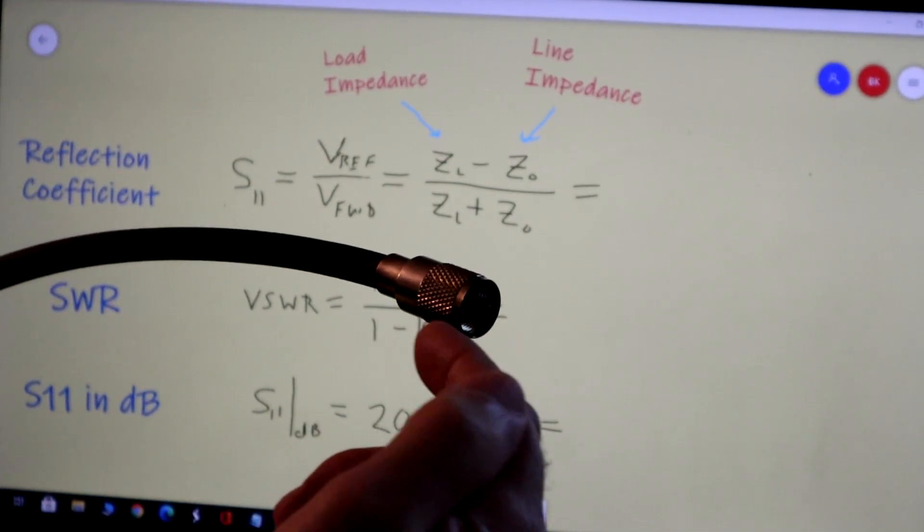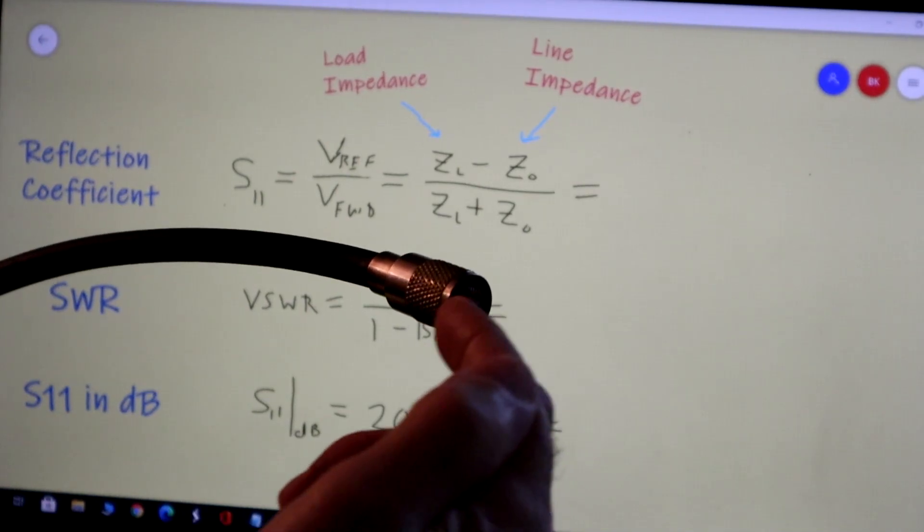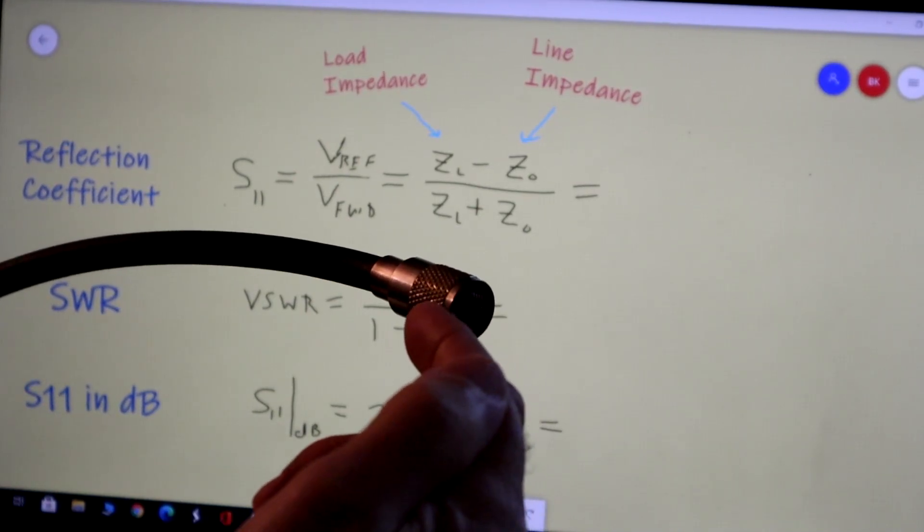So we can do some analysis, we're not going to do that here, I'm just going to tell you the answer. That this line when the signal launches on it, it looks like a 50 ohm resistance.